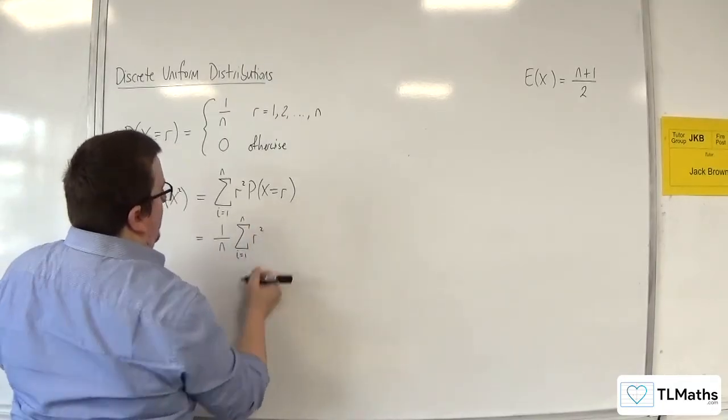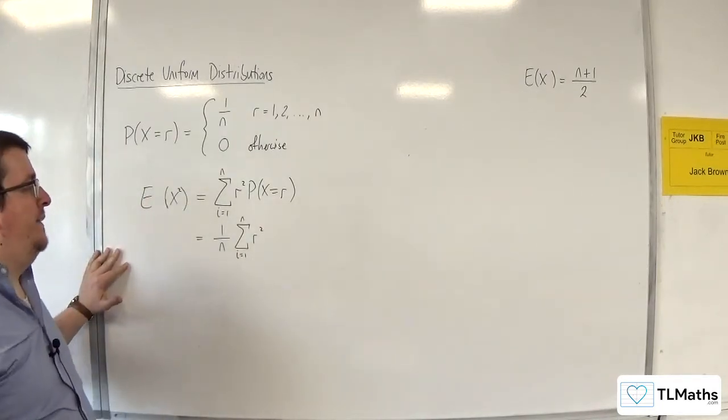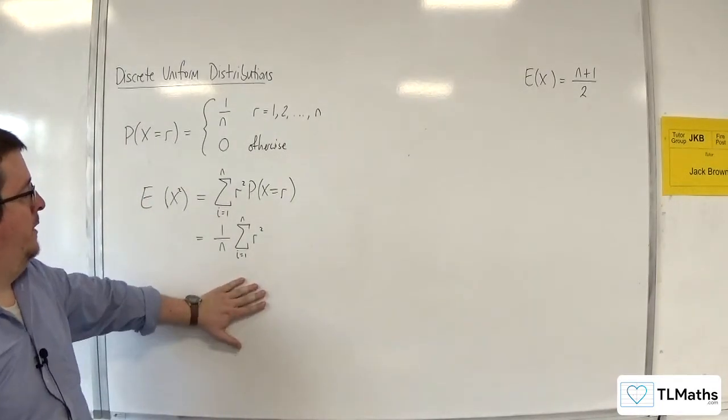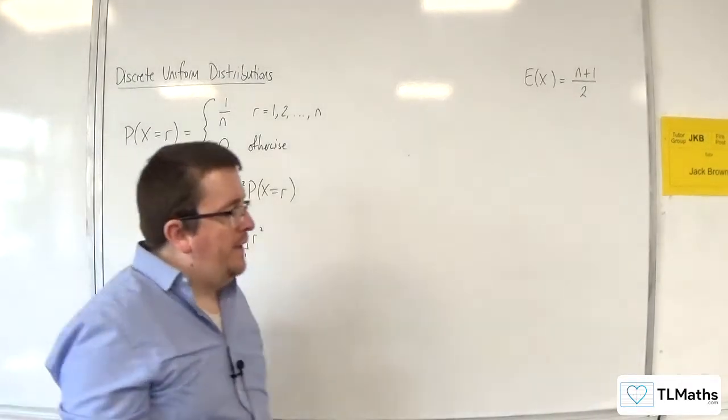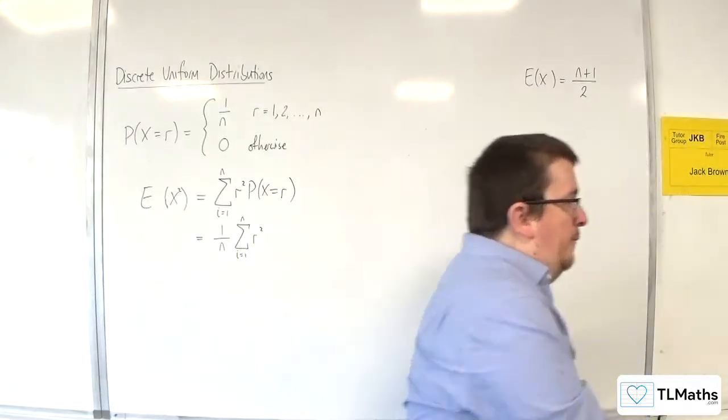So I've just done a couple of steps in one go there, in a similar way to how we did that in the previous video. Now, the sum from r equals 1 to n of r squared is one of the series formulae given to us in the formula booklet.